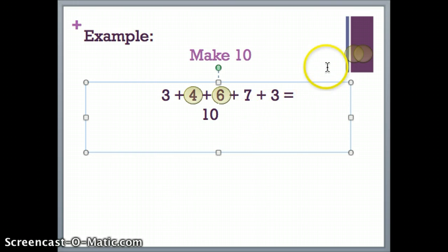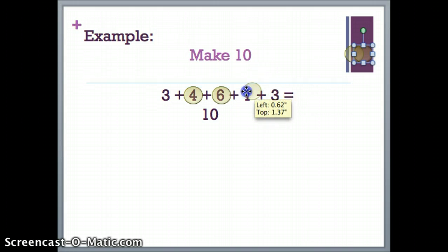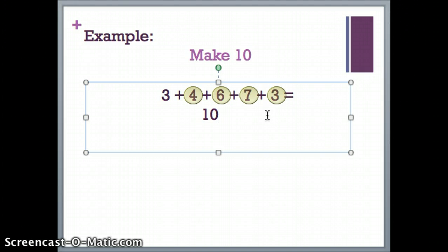Looking at the equation again, I see that 7 plus 3 also makes 10. I make sure to circle my numbers so that I can add all of them to find my sum. I notice that 3 doesn't have a circle on it, so I need to make sure I add that in also. 10 plus 10 is 20, plus 3 more equals 23. So I know my sum for this equation is 23.